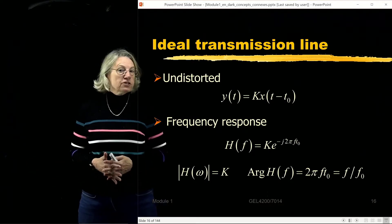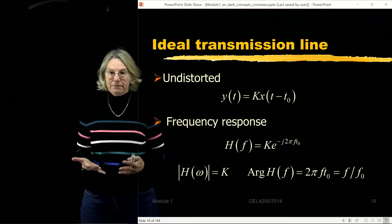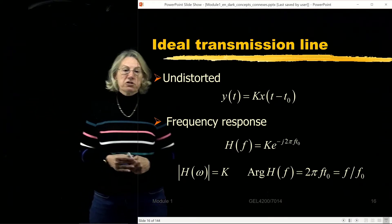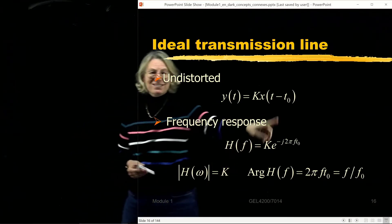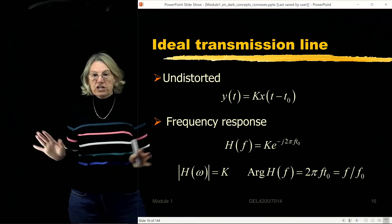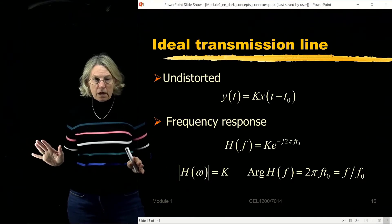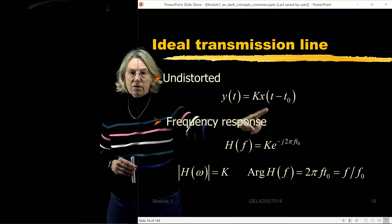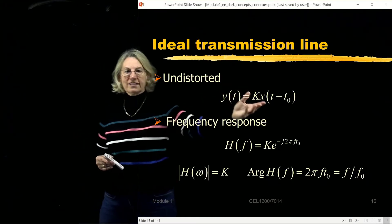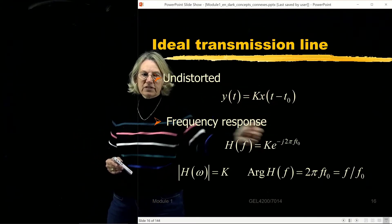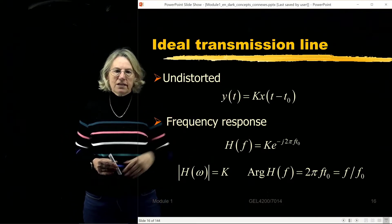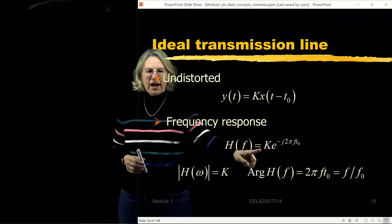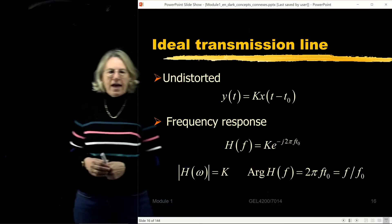The first ideal filter is what we call an ideal transmission line. Whatever I send in comes out completely undistorted — the amplitude may be changed and there might be a delay, but no distortion and no change in phase. The frequency response is very easy to find: it's k times the exponential of minus j 2 pi f times t0, where t0 is the delay.